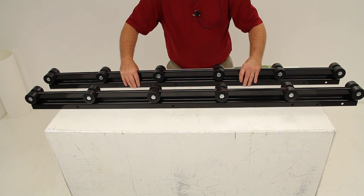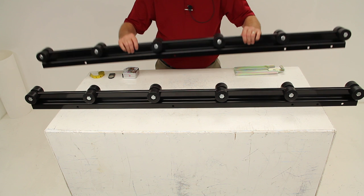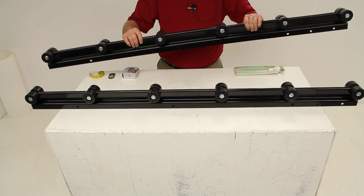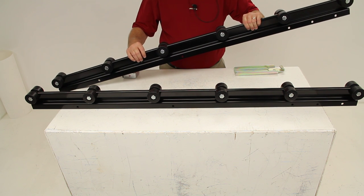These roller bunks are designed to attach directly to your wooden bunks that are two inches wide on your boat trailer.